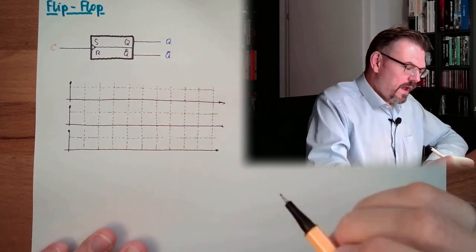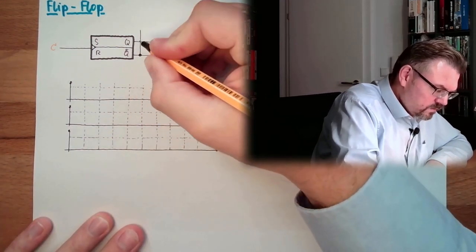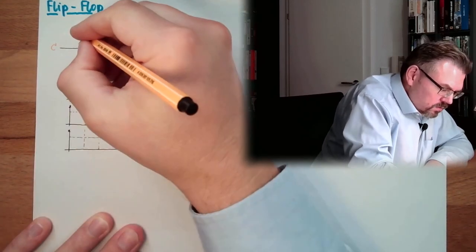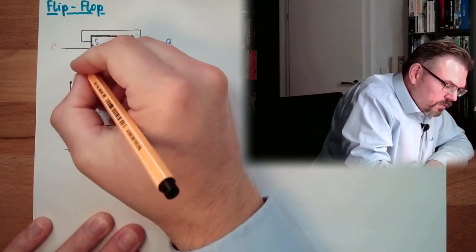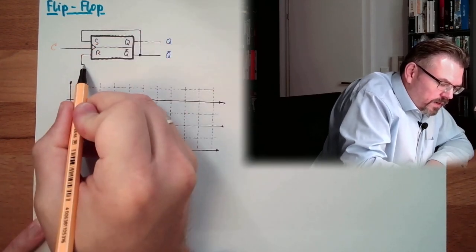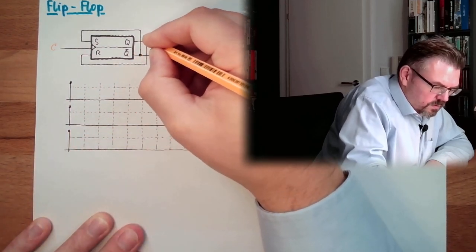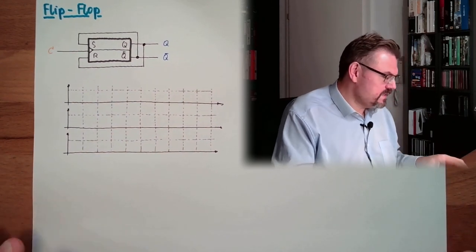And actually what I am doing is I am connecting now the NOT Q line also to the S input. And the R input I am connecting to the Q output. Now, let's think what is happening.